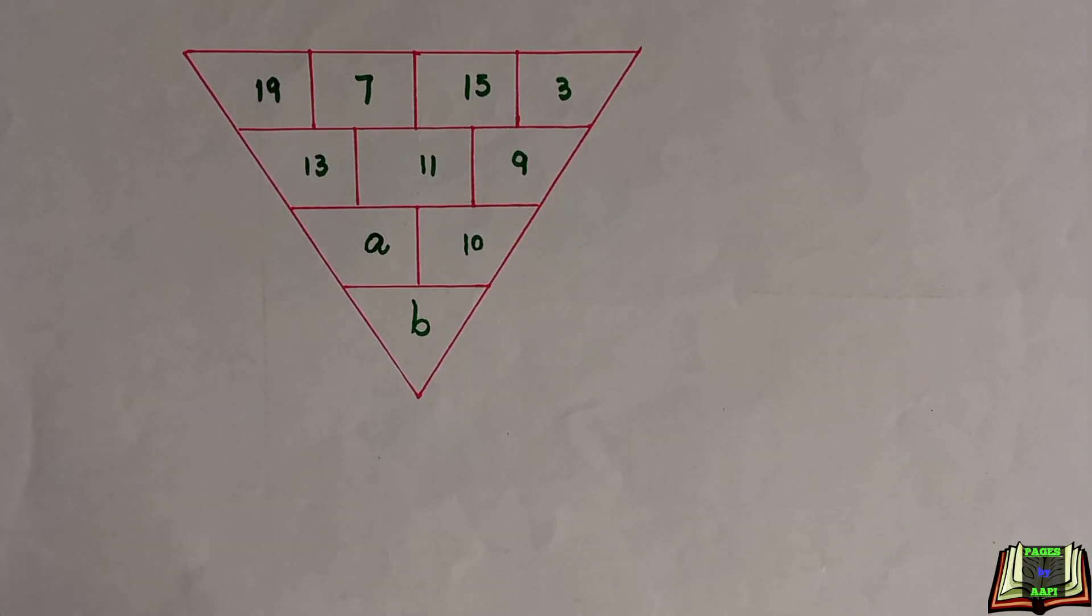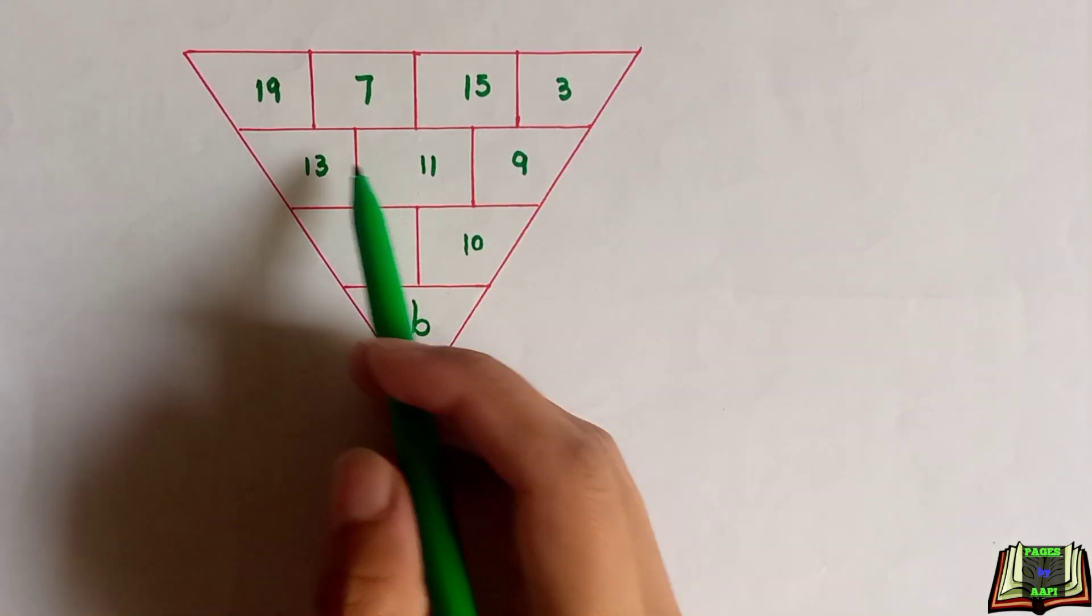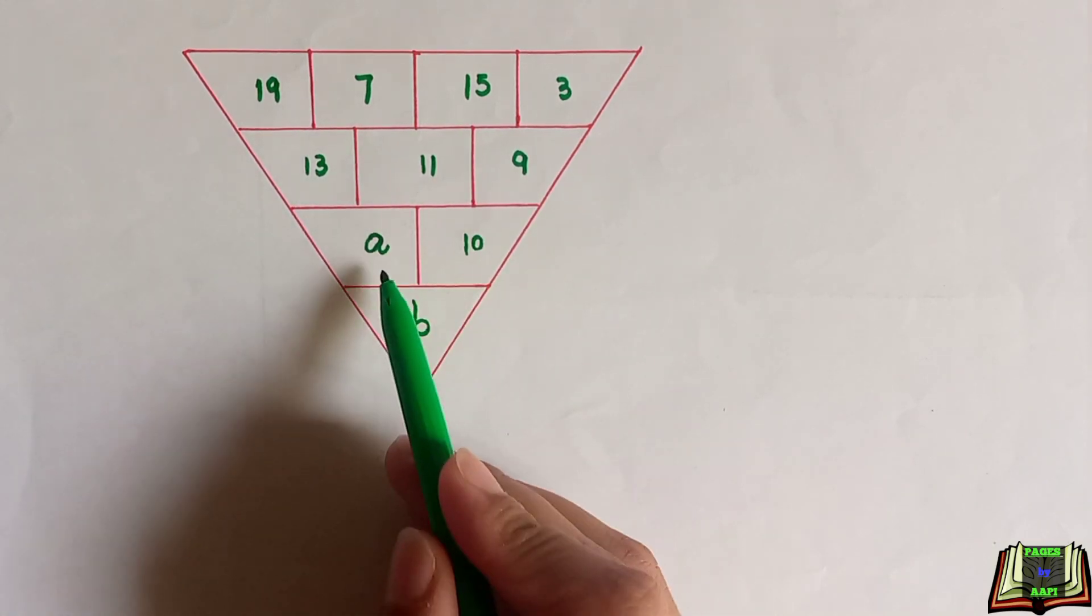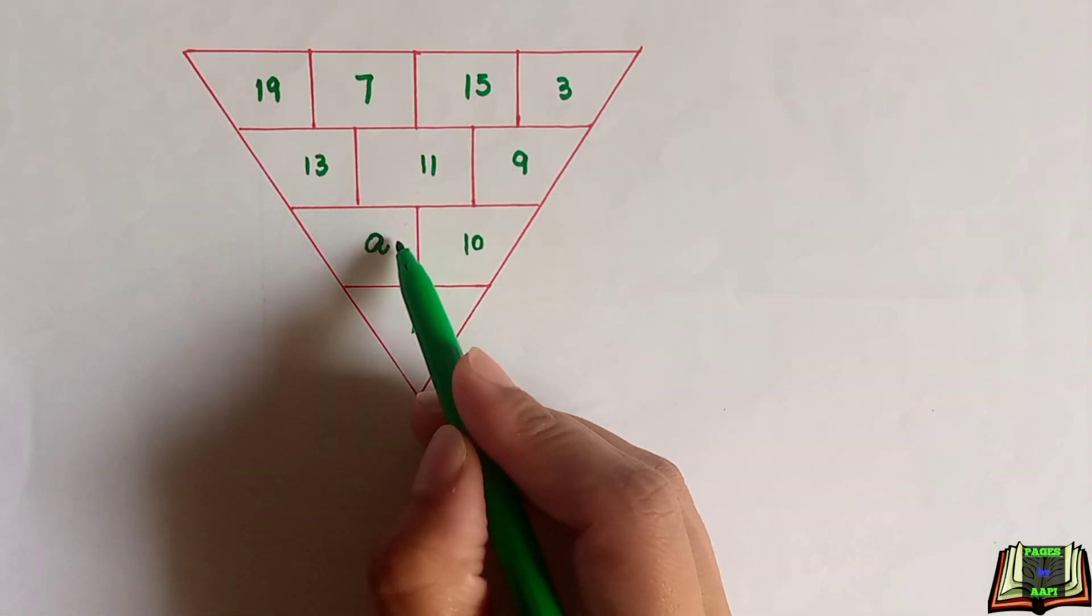Welcome back! In this video, we are going to solve this tree-like puzzle. Here, a few numbers are given and a few we have to find out, like a and b - two unknown numbers.